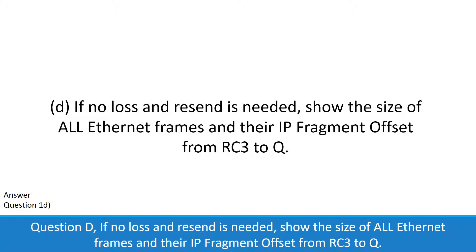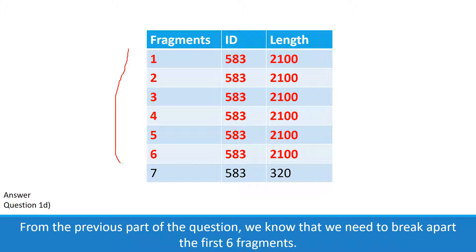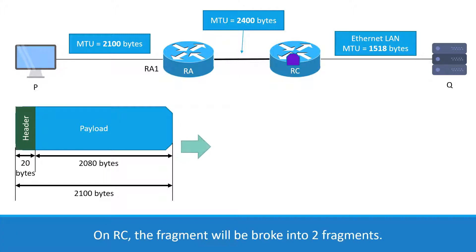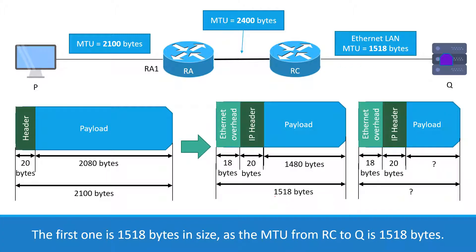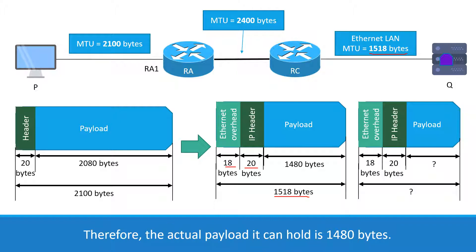Question 1d: If no loss and resend is needed, show the size of all Ethernet frames and their IP fragment offsets from RC to Q. From the previous part, we know we need to break apart the first six fragments. Taking a closer look at the first fragment: from P to RC, the first fragment is 2100 bytes in size with 2080 bytes of payload. On RC, the fragment will be broken into two fragments. The first one is 1518 bytes, as the MTU from RC to Q is 1518 bytes. The Ethernet frame has an 18-byte overhead, and the fragment also contains a 20-byte IP header, so the actual payload it can hold is 1480 bytes.